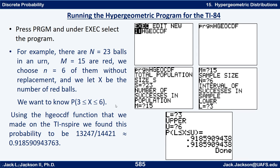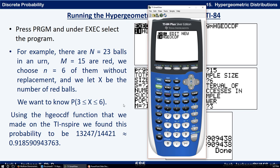Now let's run the program. You can actually watch it running here. So to run the program, you might have other programs on here, but find this program, go to execute, which is the first thing. Find the program and hit enter. And then hit enter once more to run it. See it says total population size S. So let's look at this example. There are N equals 23 balls in an urn, 15 are red. We choose n equals six of them without replacement.